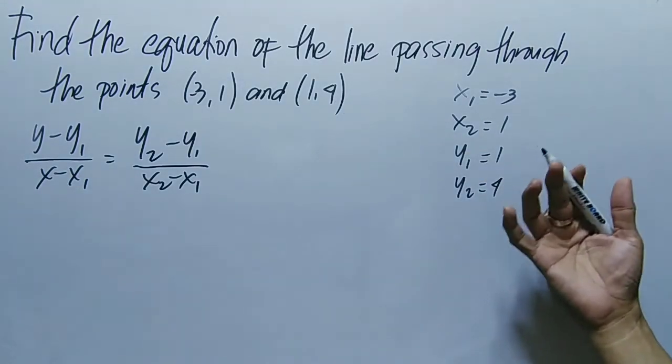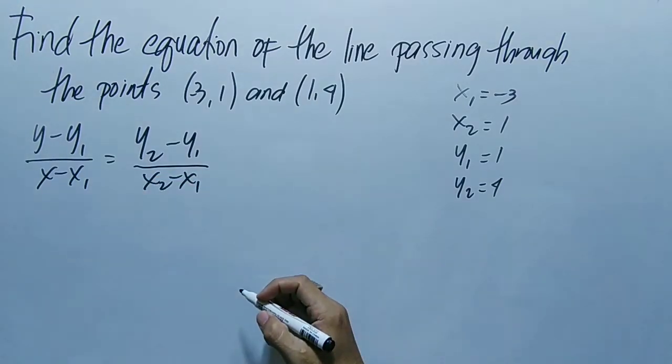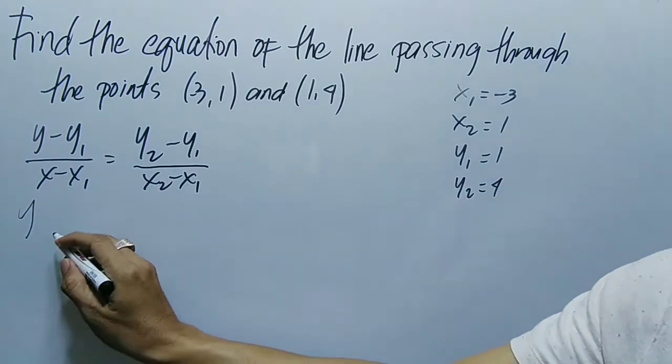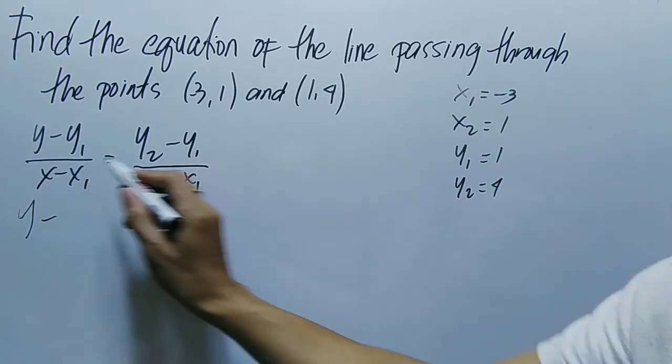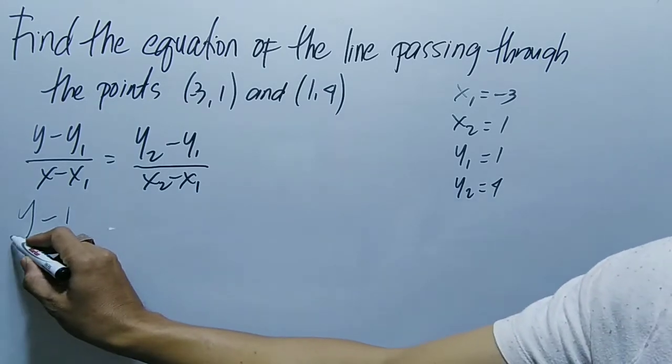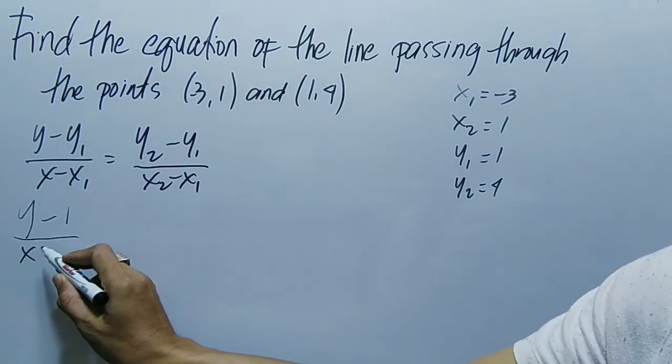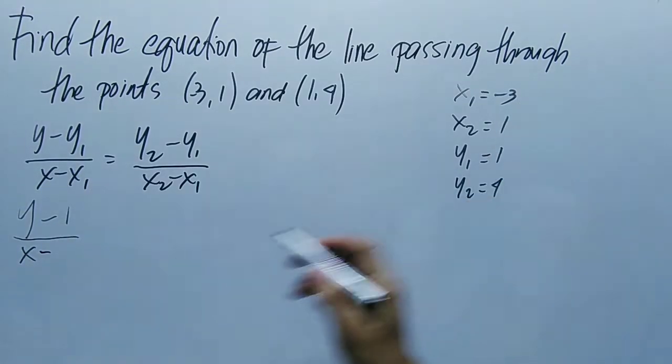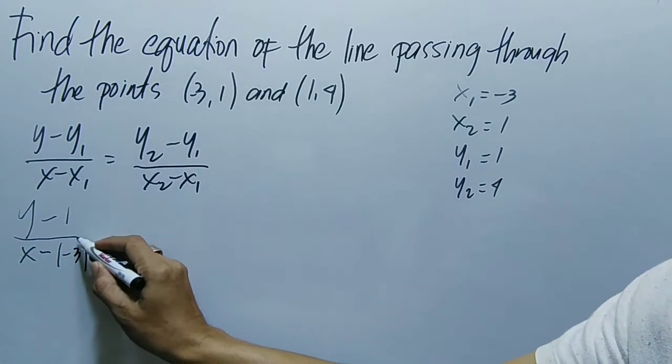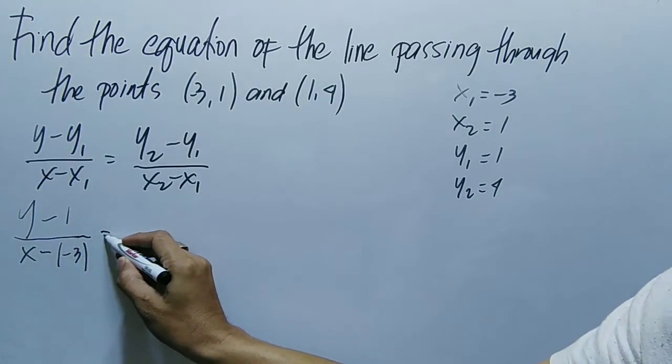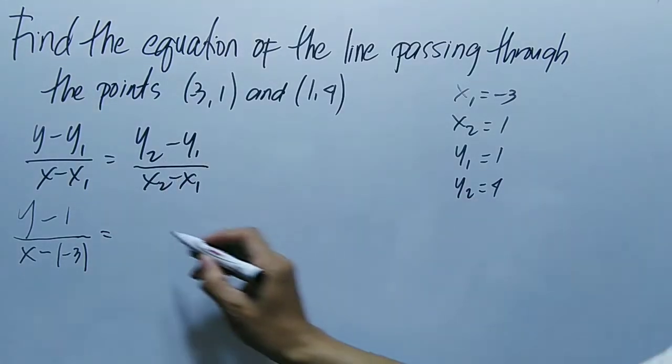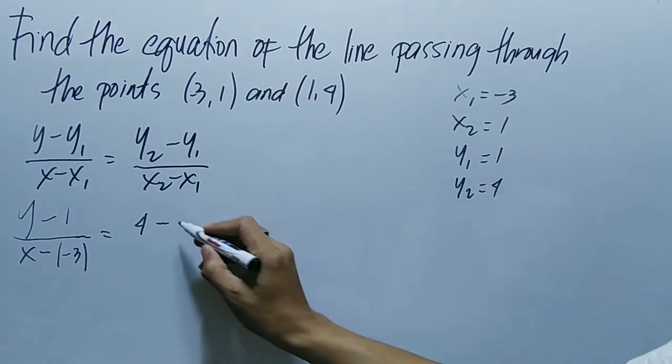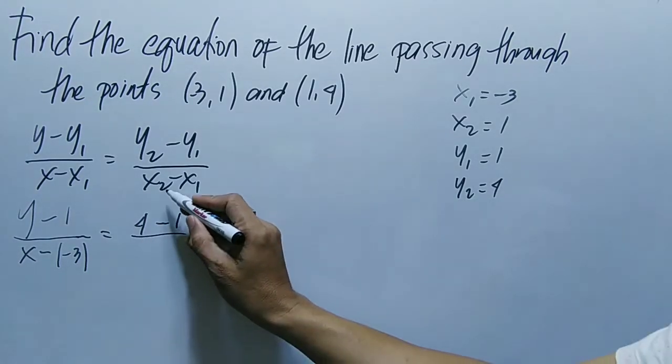And then we have to substitute these values into our formula. So we have y minus y₁, which is 1, over x minus x₁, which is -3.